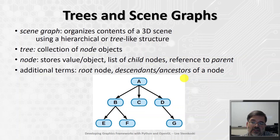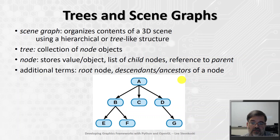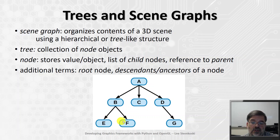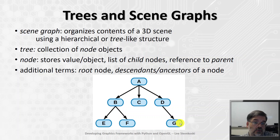Each node is an object which stores some kind of a value or some other object. It also contains a list of child nodes, and for convenience, let's say it contains a reference to the parent. So for example, here at the top we have node A, which has three child nodes: B, C, and D. Each of these child nodes has A as its parent. B has two child nodes, E and F. C has no child nodes, and D has one child node, node G.